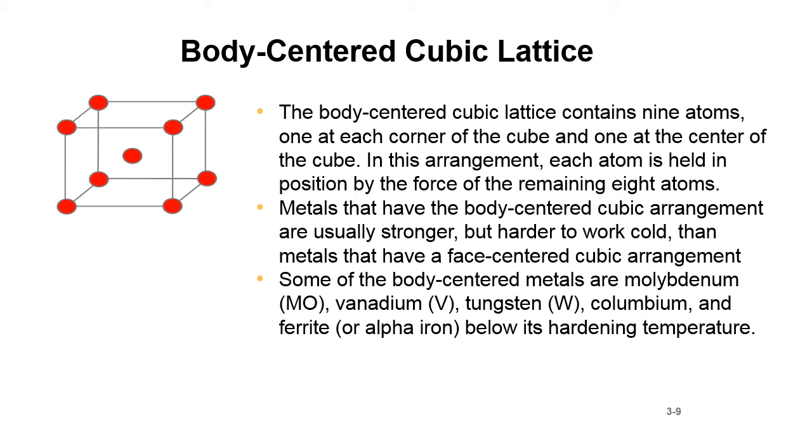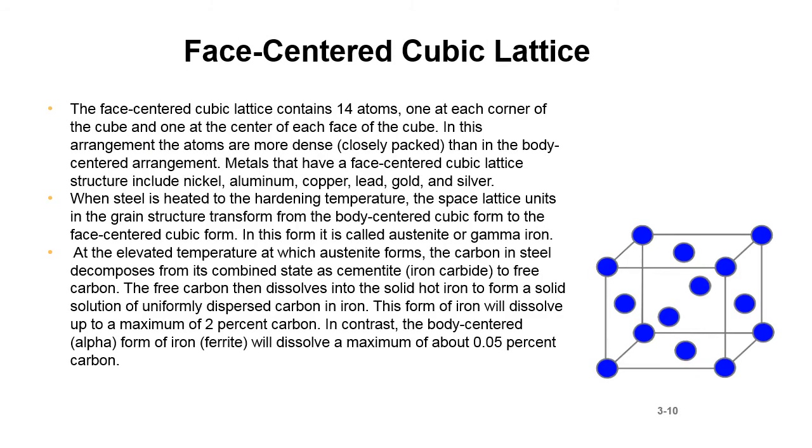Face-centered cubic lattice. The face-centered cubic lattice contains fourteen atoms, one at each corner of the cube and one at the center of each face of the cube. In this arrangement, the atoms are more densely closely packed than in the body-centered arrangement. Metals that have a face-centered cubic lattice structure include nickel, aluminum, copper, lead, gold, and silver.